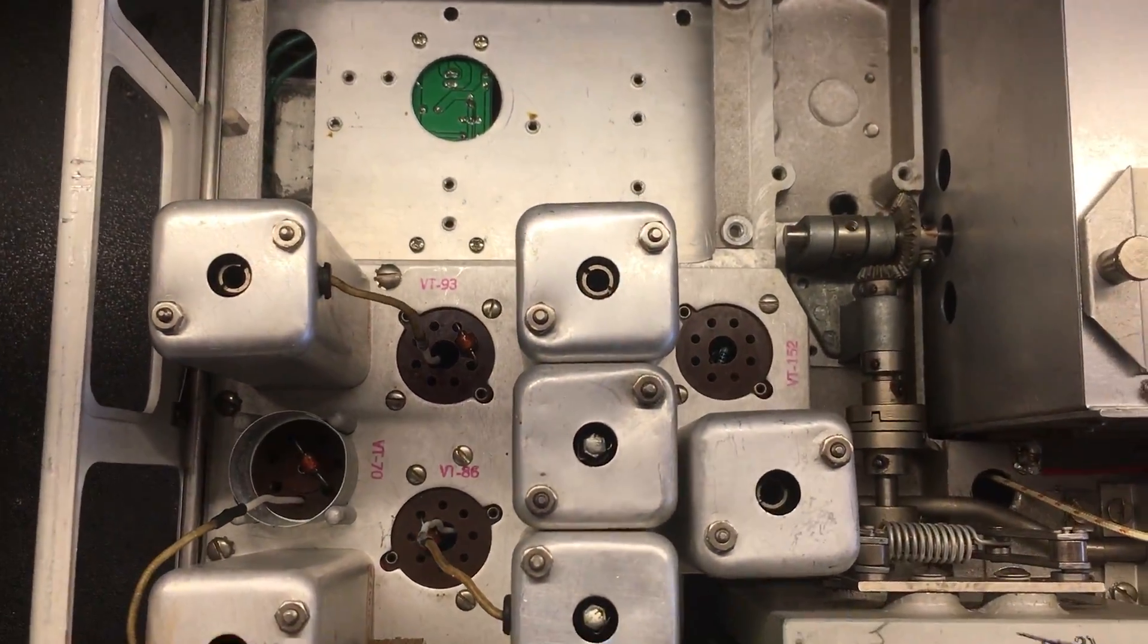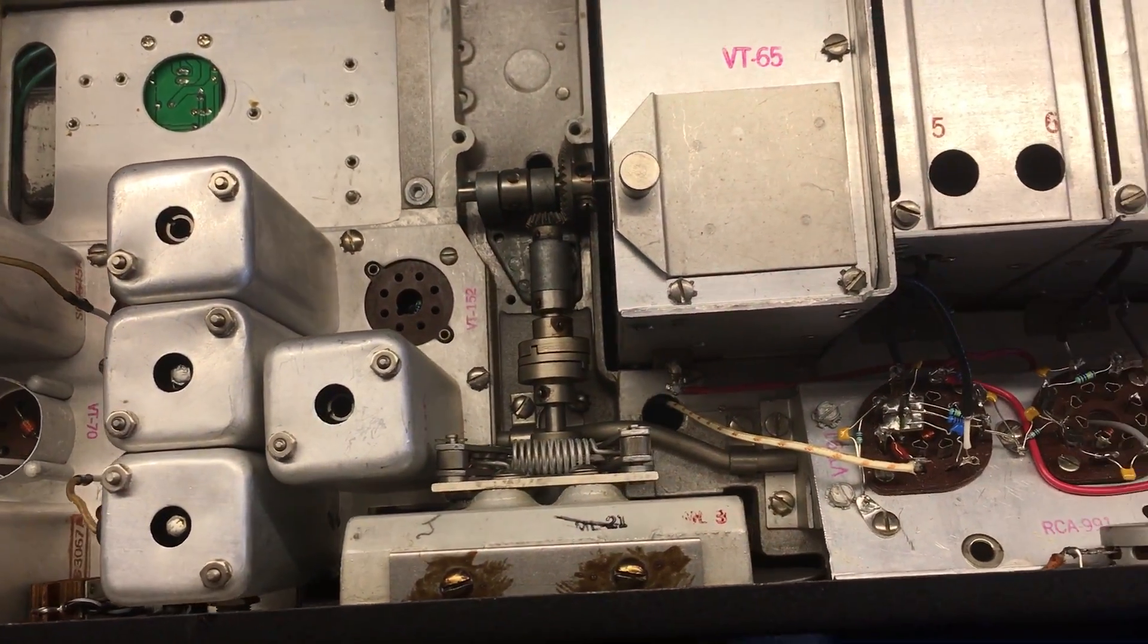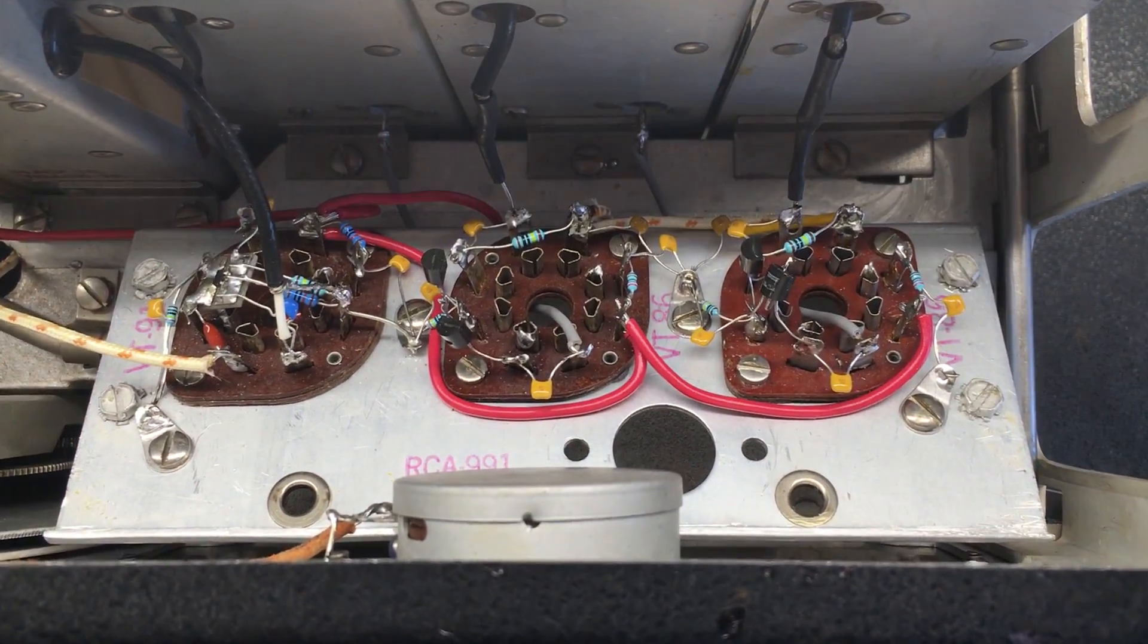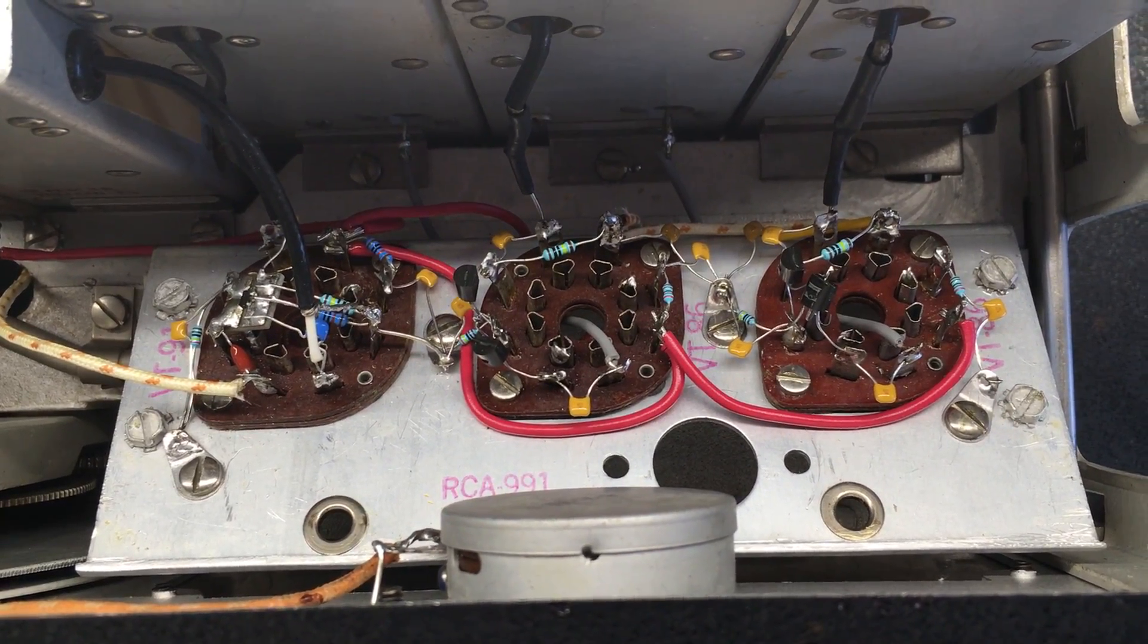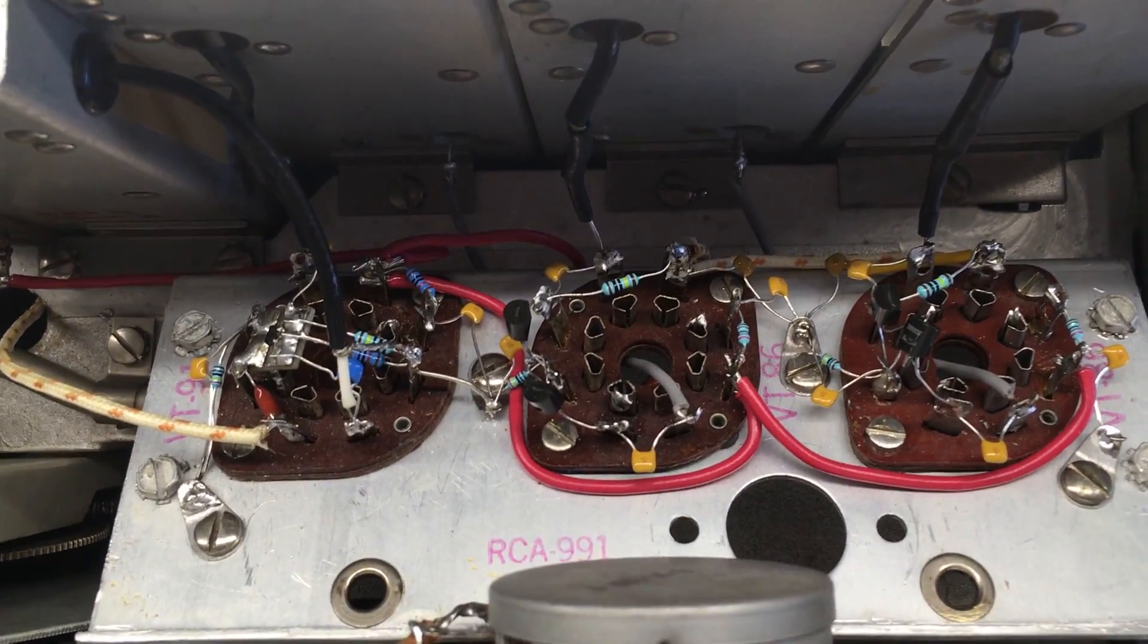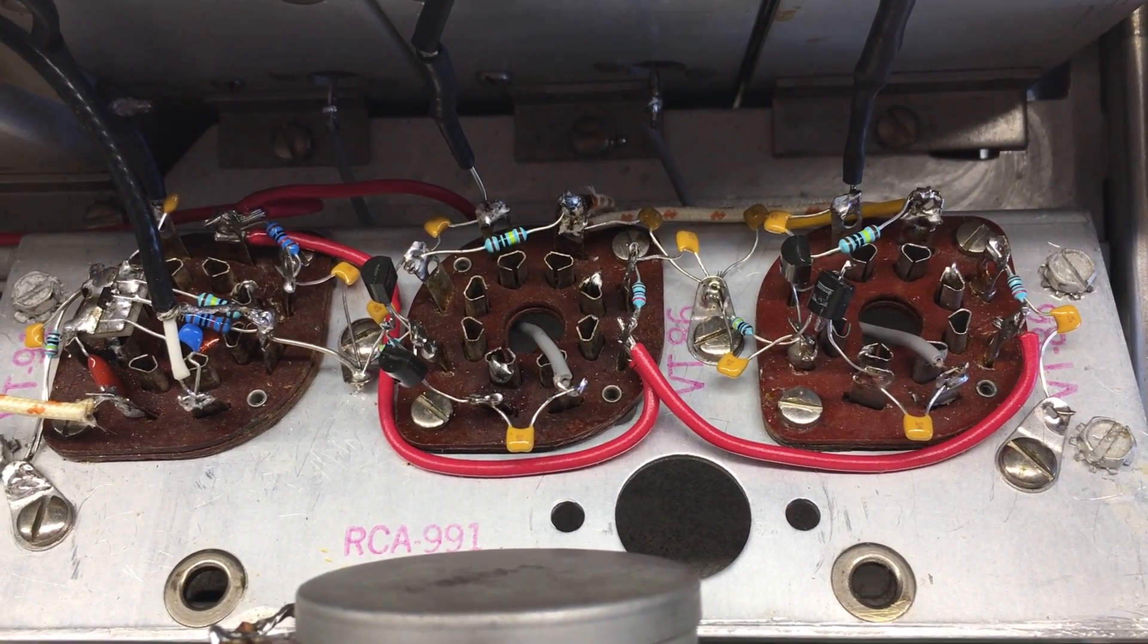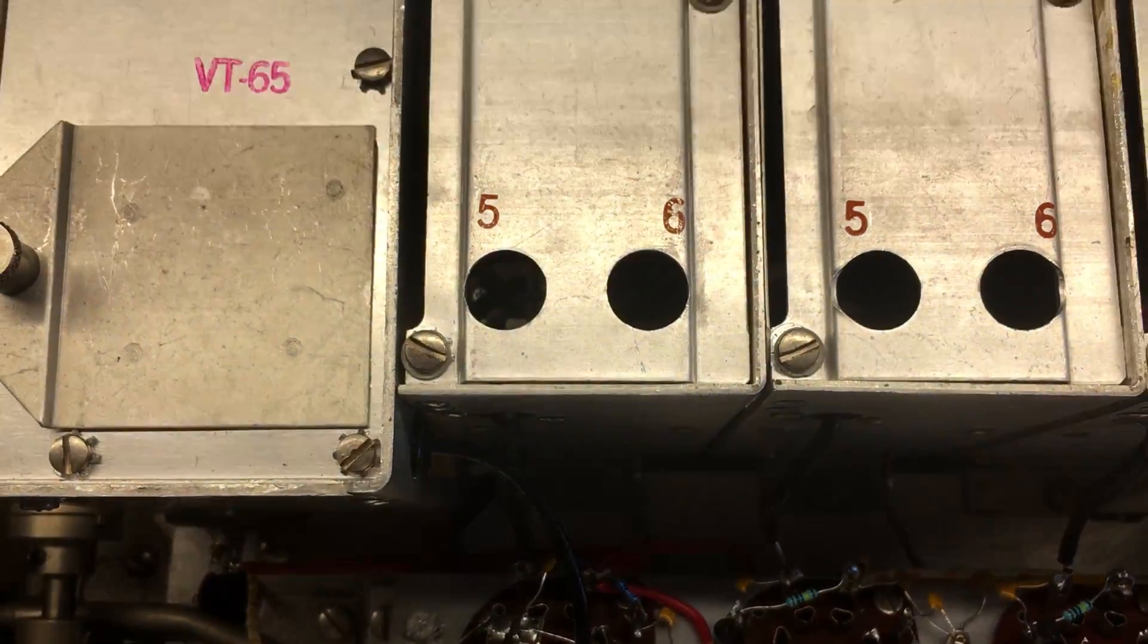As you can see, the tubes are removed, and you can also see that there are some tube sockets that were turned upside down in order to wire them much easier than if they were positioned the original way. So there you can see some transistors and some ceramic capacitors and resistors, and then there's the tuning units.